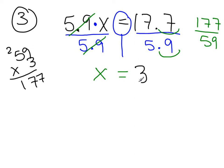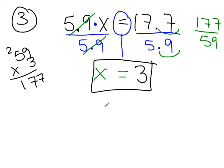If the division didn't come out evenly, you'd reduce the fraction. Since we started with decimals, your answer should be in decimal form. The homework directions will always specify the required format — whole number, decimal, fraction, or mixed numeral. Always try to reduce your answer unless instructed otherwise.